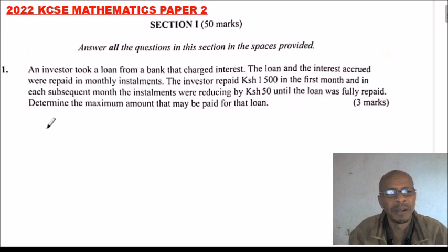We have question number one here. It says an investor took a loan from a bank that charged interest. The loan and the interest accrued were repaid in monthly installments. The investor repaid 1500 Kenyan shillings.